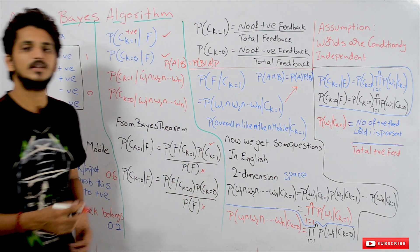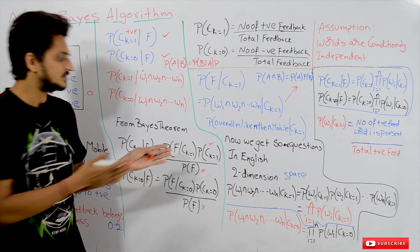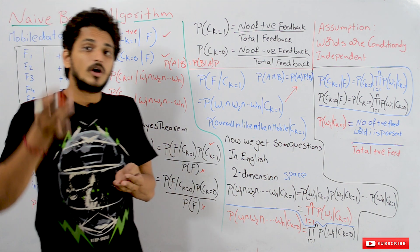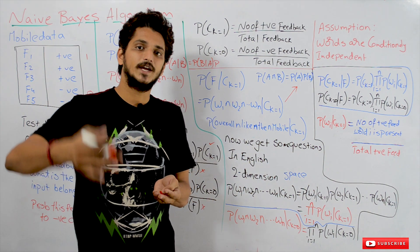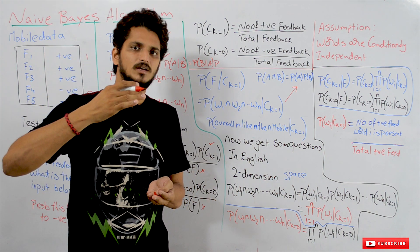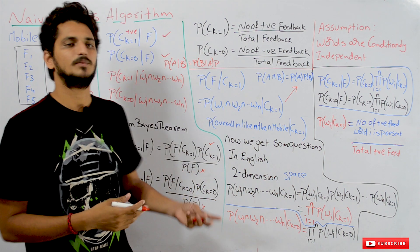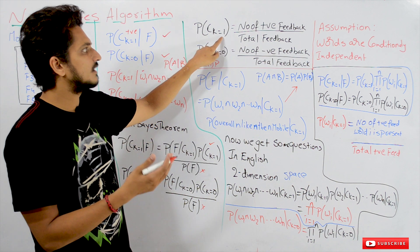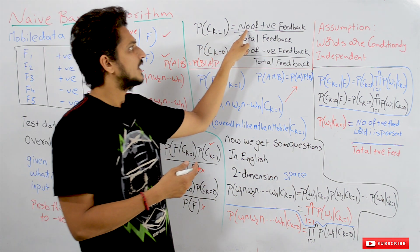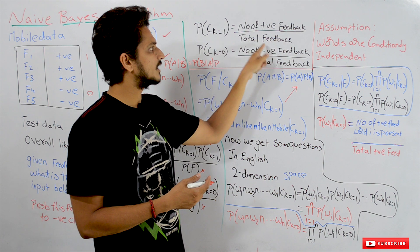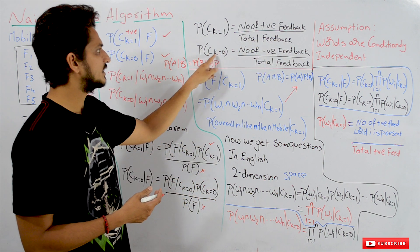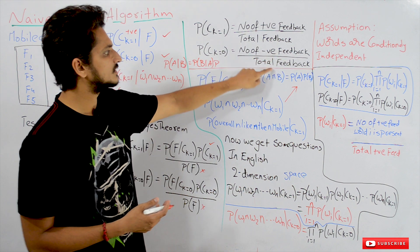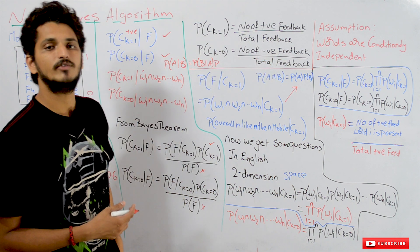Calculating P(CK=1) and P(CK=0) is very easy. P(CK=1) means the probability of the positive class — out of all feedbacks, how many are positive. So P(CK=1) = number of positive feedbacks / total feedbacks. Similarly, P(CK=0) = number of negative feedbacks / total feedbacks.